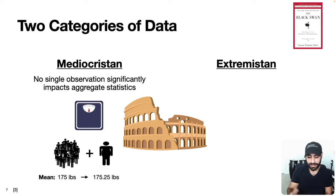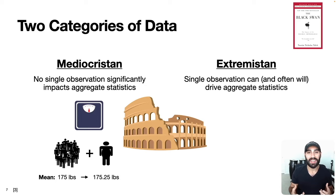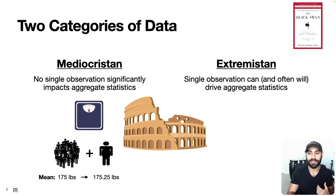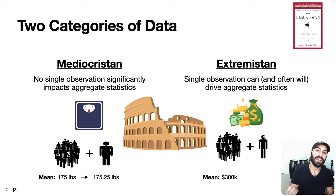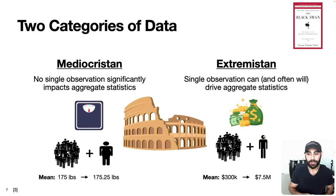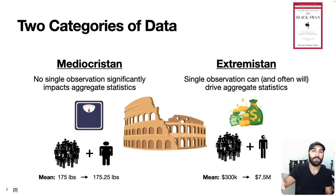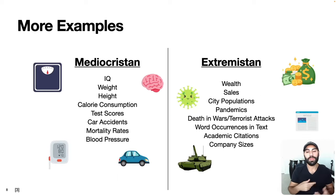Data from extremistan is different. A single observation can and often will drive the aggregate statistics. Instead of weighing people at the Colosseum, suppose you ask them their net worth. You get 1,000 people and find a mean net worth of about $300,000. Then you add the richest Italian to the sample. The average net worth jumps from about $300,000 to $7.5 million — a roughly 25x increase from just a single observation. That's the key property of data following a Pareto-like distribution.